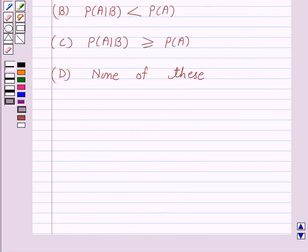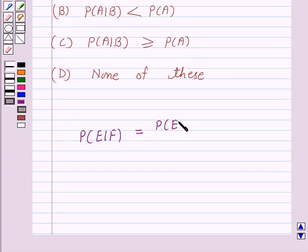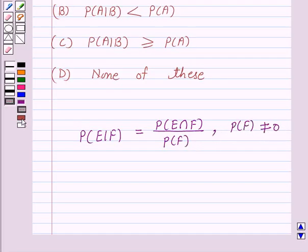Now we know that the conditional probability of an event E given the occurrence of the event F is given by: probability of E given F is equal to probability of E intersection F over probability of F, provided probability of F is not equal to 0. So this is the key idea behind this question.